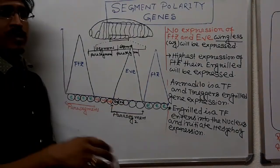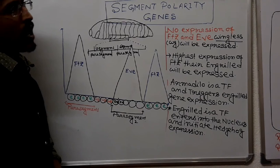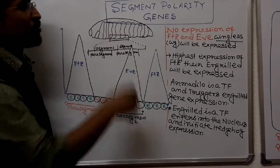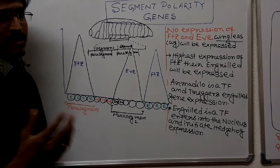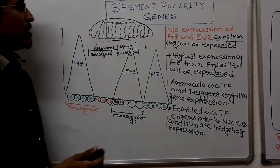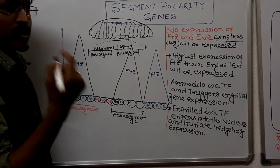The question comes from Drosophila genetics, specifically from segment polarity genes. Drosophila, as an insect, has a segmented body which actually forms during the embryonic stage, where different segmentation also occurs.